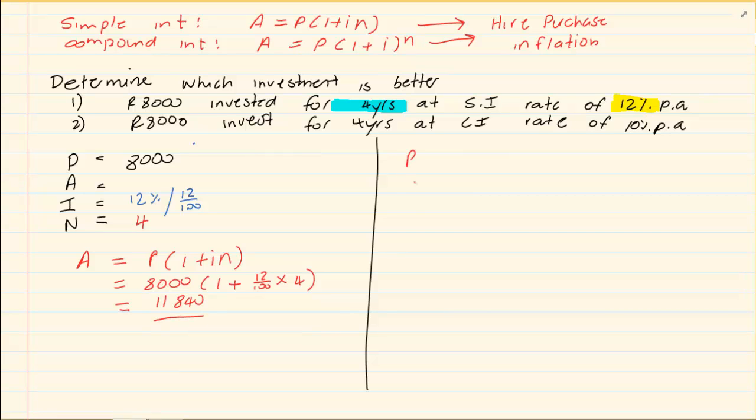Now let's calculate the compound interest. Again you still use your P. We fill in our information. Now be careful it is not the same as your simple interest. The interest rate now is 10%, so we have our interest of 10% and we are also investing it for four years.